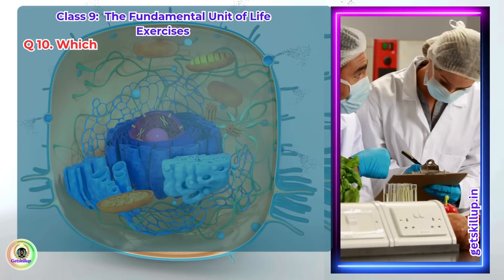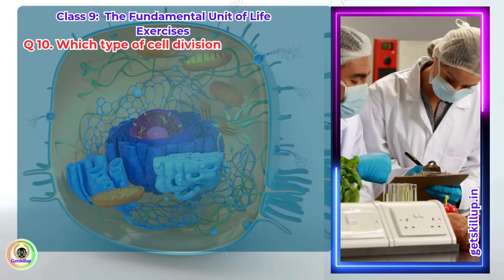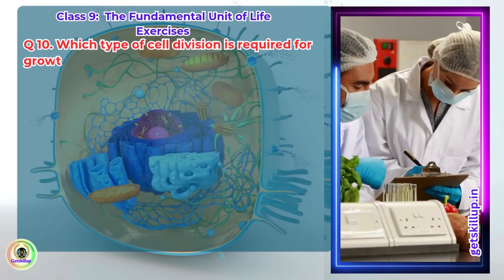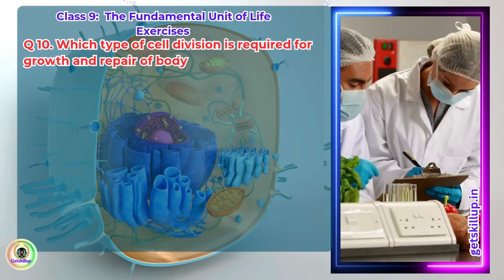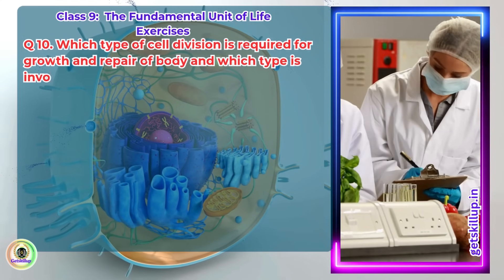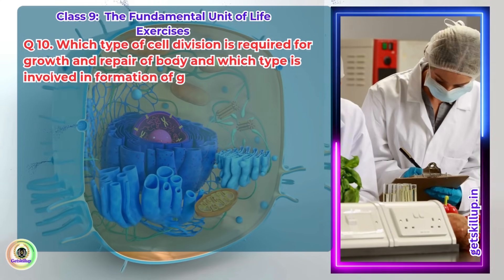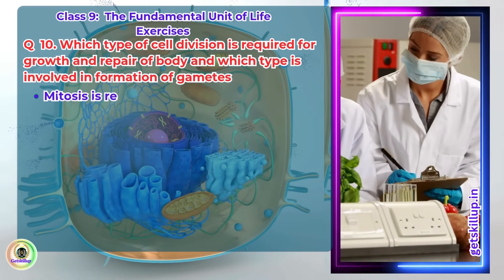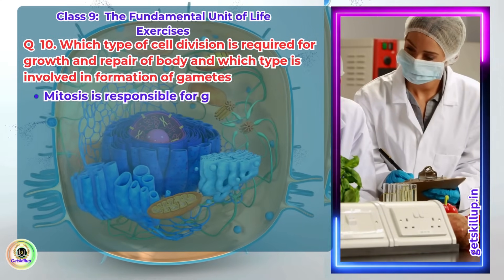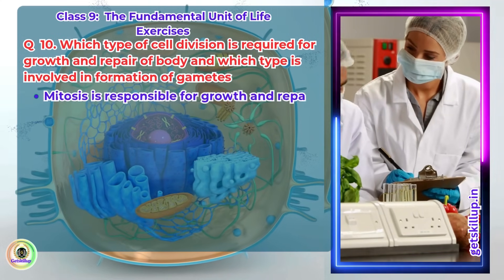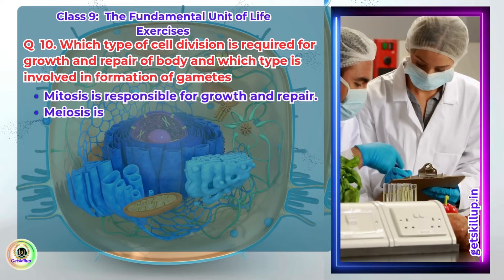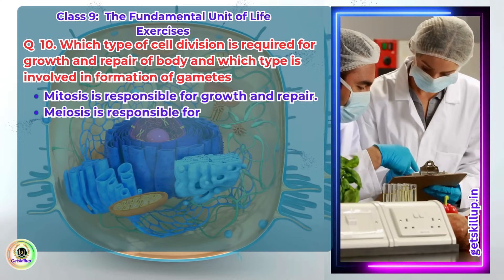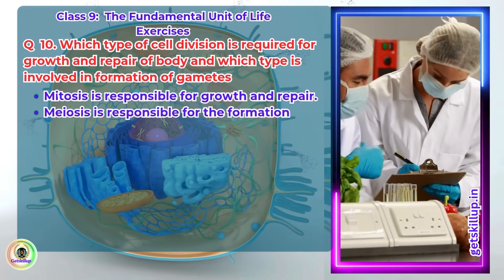Question 10. Which type of cell division is required for growth and repair of body, and which type is involved in formation of gametes? Mitosis is responsible for growth and repair. Meiosis is responsible for the formation of gametes.